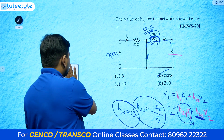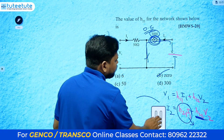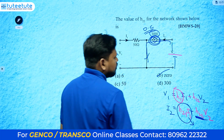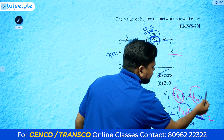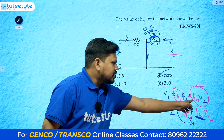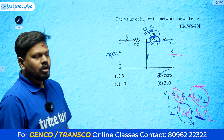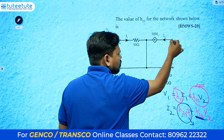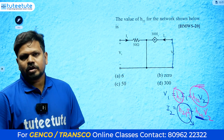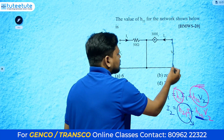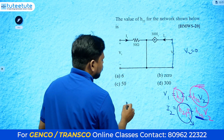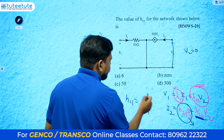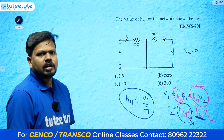If they ask about h11 instead: to find h11 we make the other term zero, so v2 equals 0, which means a short circuit on the output side. Voltage equals 0 in short circuit. With v2 short-circuited, we need to calculate h11, which equals v1 divided by i1.